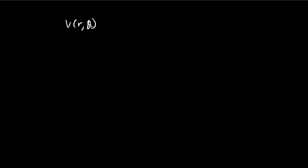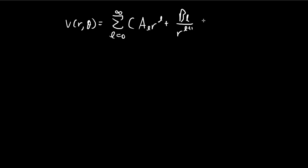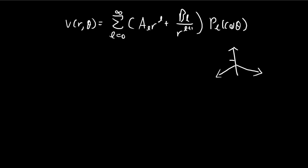We're told to find the potential for the given configuration. Using spherical coordinates, we start by applying separation of variables, so we know our answer has to look like a standard form. By considering some of the boundary conditions, we can simplify our solution.